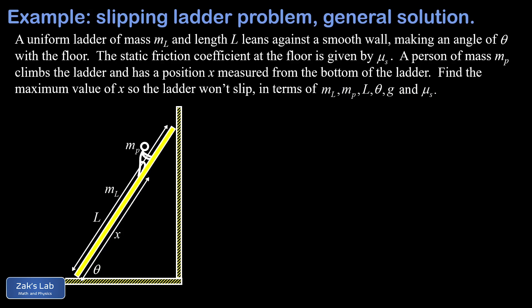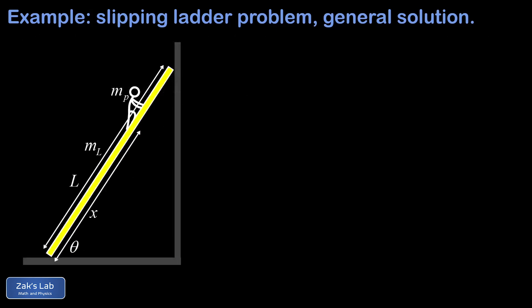As we set up the problem we end up with a complicated force diagram, so we zoom in on the picture to give as much room as possible. We label all the forces acting on the ladder. Gravity acts at the center of mass of the ladder with magnitude m_L times g. The force exerted by the person on the ladder acts at distance x from the bottom, where x represents the average location of the person's weight, with magnitude m_P times g downward.